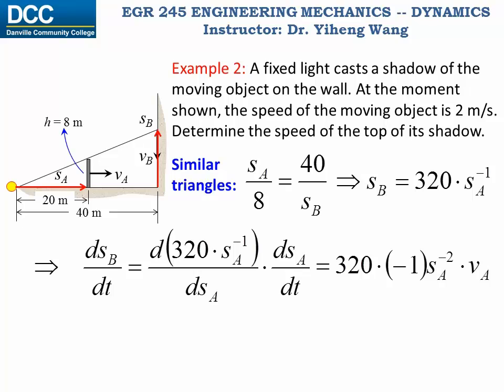Therefore, since we know that SA equals to 20 meters and VA equals to 2 meters per second, we substitute those in, we can calculate VB to be negative 1.6 meters per second. Negative sign indicates that the top of the shadow moves downwards.